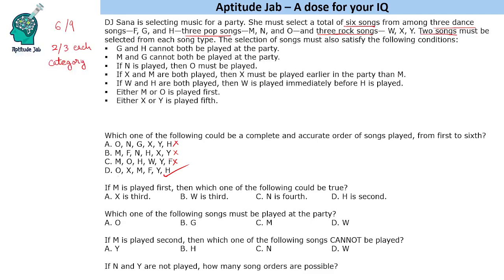Question 2: If m is played first, which of the following could be true? We have songs from categories f,g,h and w,x,y with two songs needed from each. Since m is first and the condition states if x and m are both played then x must be played earlier than m, x cannot be played. So w and y will be played from the rock category.